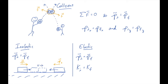So we lost kinetic energy. Mechanical energy was lost in this collision. That's a kind of collision that we call inelastic. Anytime you lose mechanical energy and you only conserve momentum, it's an inelastic collision.